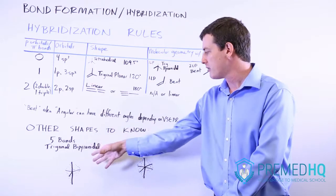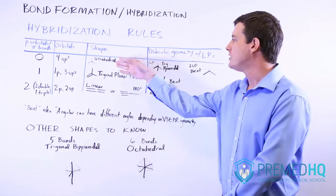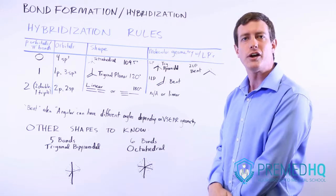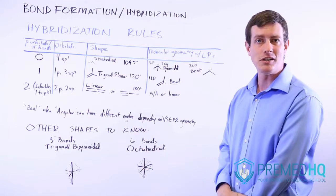So know your trigonal bipyramidal geometry. Know your octahedron and know tetrahedron and trigonal planar very well. And for those two keep in mind the angles between those bonds as well.